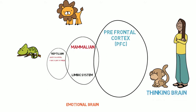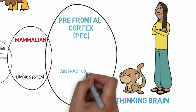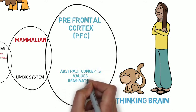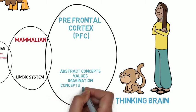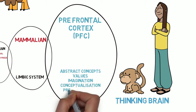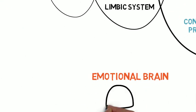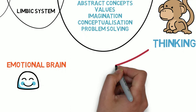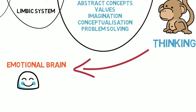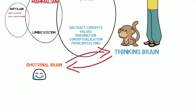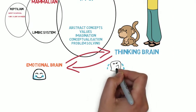So in the prefrontal cortex, a lot of things: abstract concepts, our values are held within there. The imagination and conceptualization, you've also got your problem solving as well. Now, the interesting thing as human beings is we have this emotional component and the thinking component, and we can think about our emotions, and then we also get emotional about our thinking. Good to be aware of this.